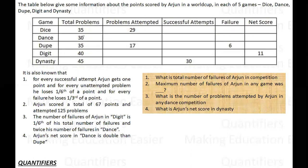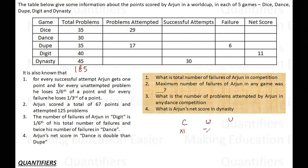The table below gives some information about the points scored by Arjun in a World Cup across five games. These are the five games and the total number of problems. For every successful attempt, Arjun gets one point. Attempts are divided into three parts: correct, wrong, and unattempted. For every correct he gets one mark, for every incorrect he loses one-third, and for every unattempted he loses one-sixth.